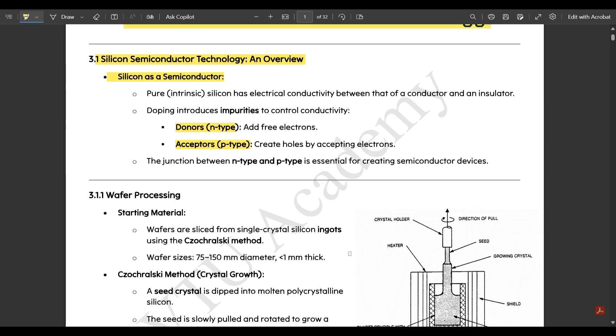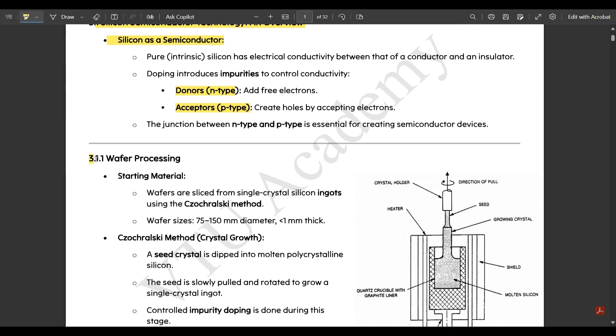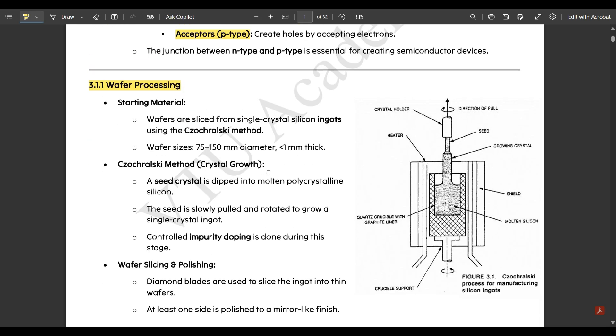Semiconductor devices - next is about wafer processing. This is the complete diagram of a Czochralski method, the Czochralski process for manufacturing the silicon ingots. This diagram they might be asking, you should be making a note of it. Here what they have done is the amount of silicon is stored inside, and this is the direction of pull. The amount of silicon to be released is kept under the wafer.